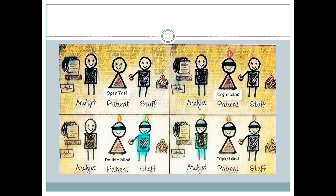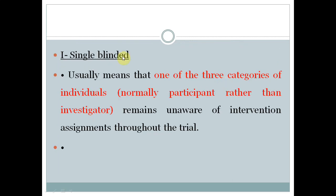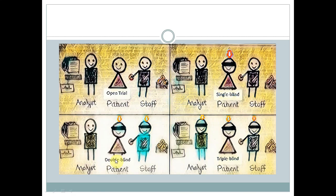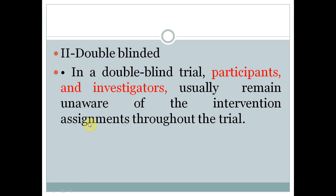Blinding means the participants are blinded to the particular intervention they are being given — not the allocation itself, but the specific treatment. So in a single blind study, the patient or participant is blinded. That is one of the three categories: participants, investigators, and assessors. Usually when we say single blind, it is the participants who are blinded. In a double blind trial, both the patients and the staff or investigators are blinded — they don't know what intervention they are giving or to which group.